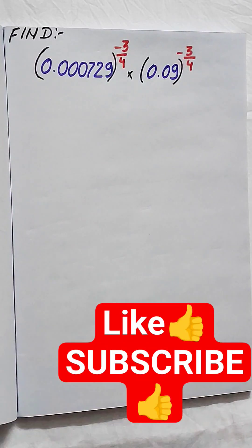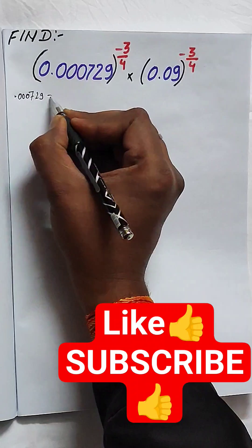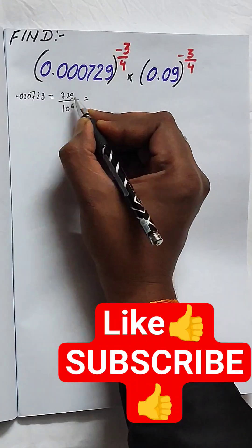We have to find the value of the given numbers: (0.000729)^(-3/4) × (0.09)^(-3/4).